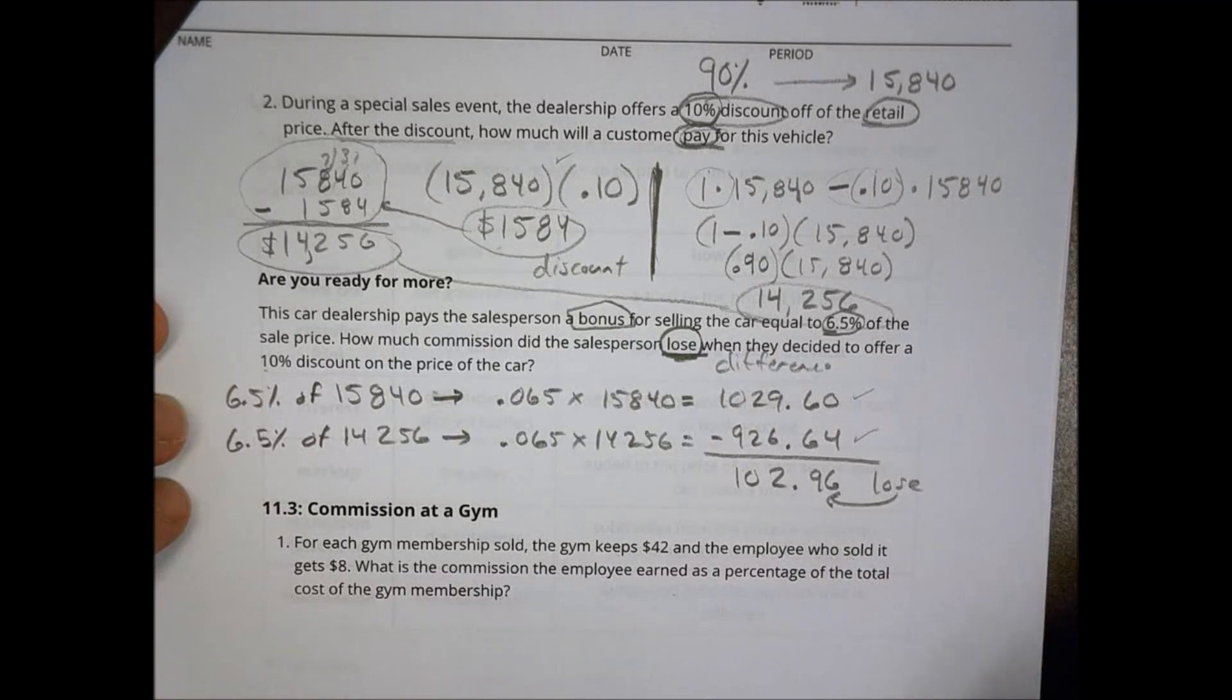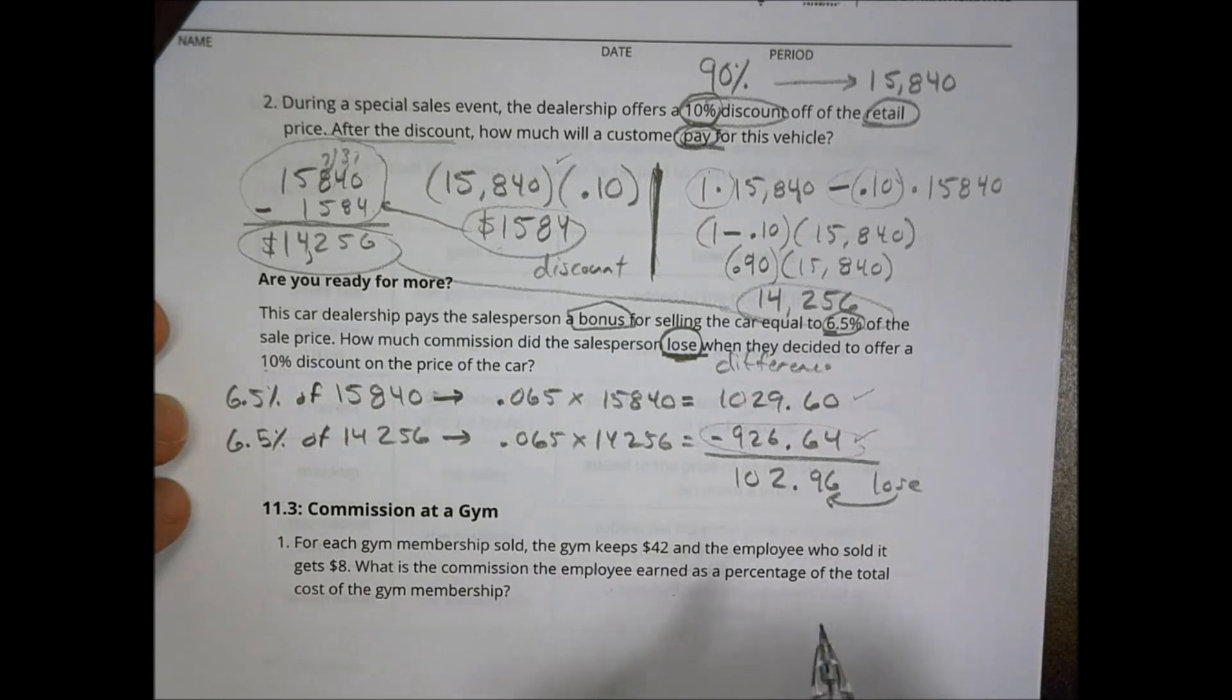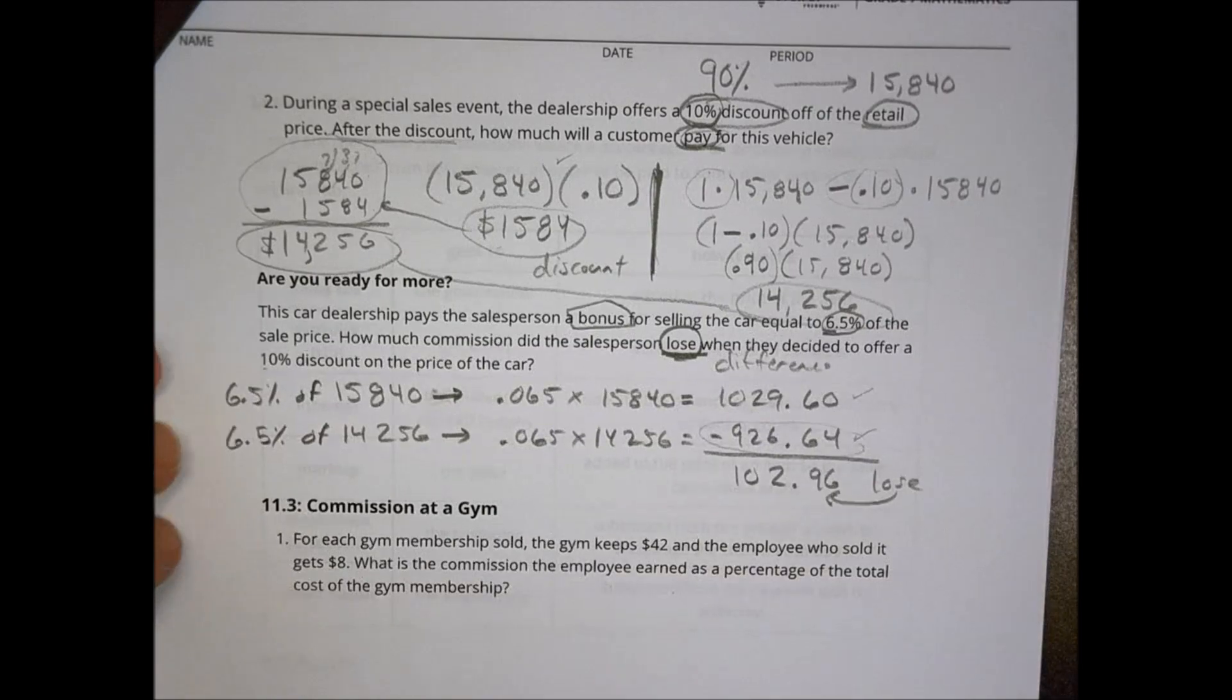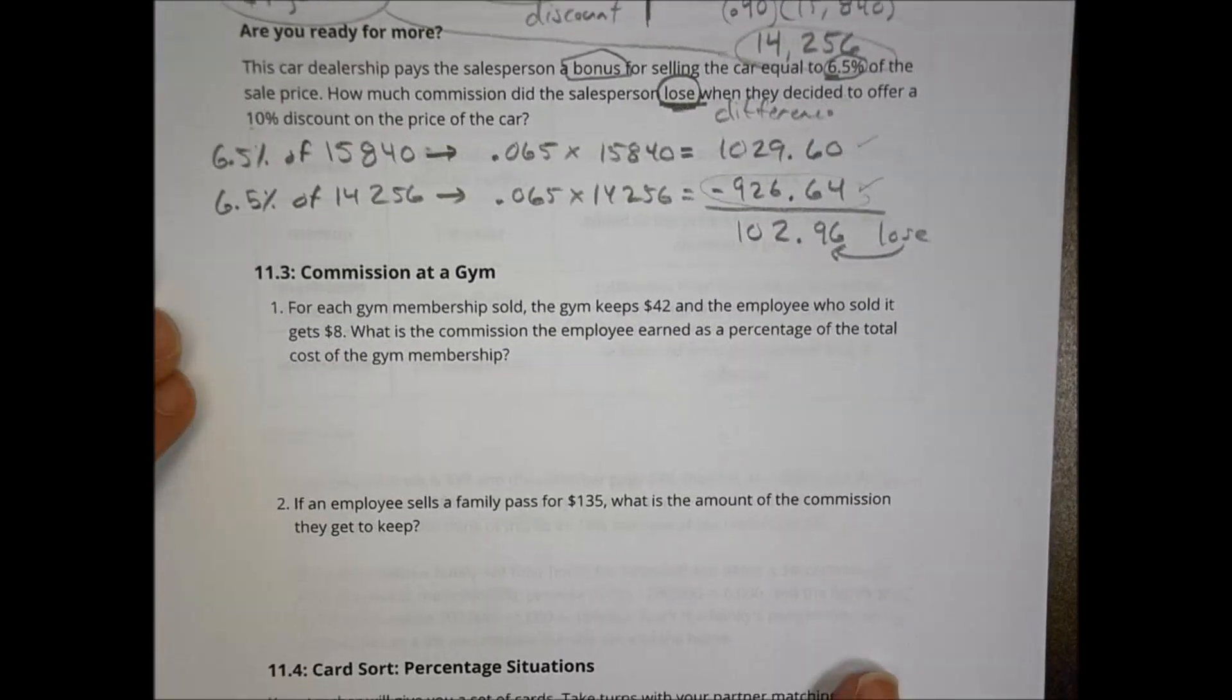This is how much he lost by giving a discount. Same time, he made a sale, so at least he made money. So he still made $900, even though he lost that. Maybe if he didn't get the discount, he wouldn't have gotten any money, hard to say.